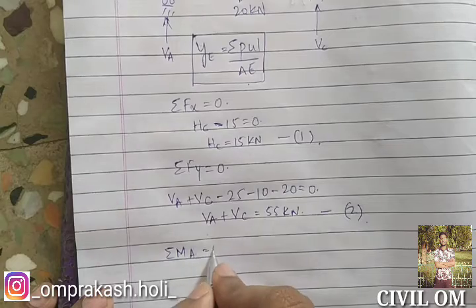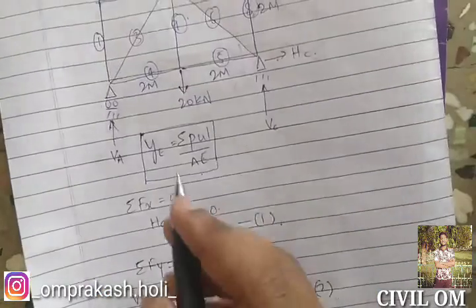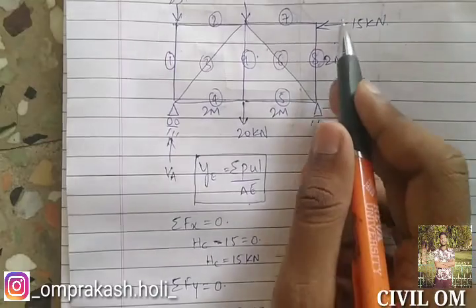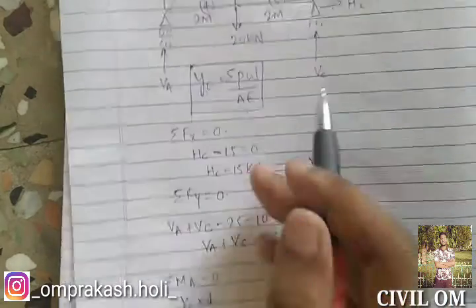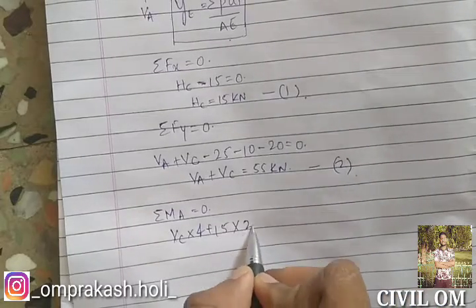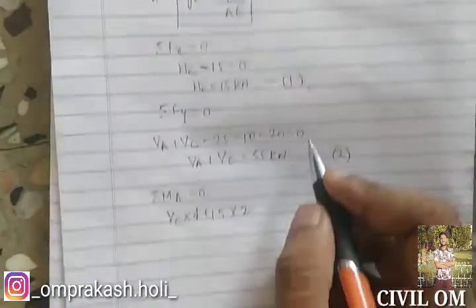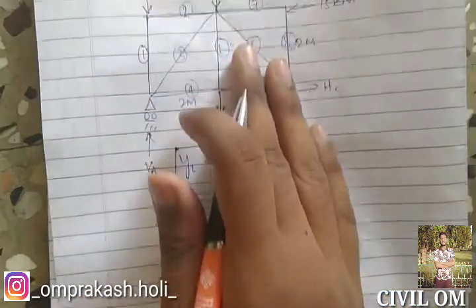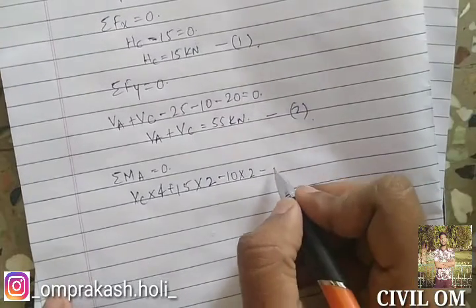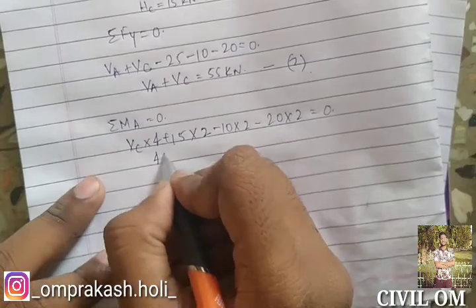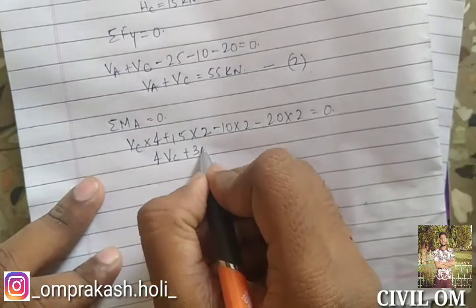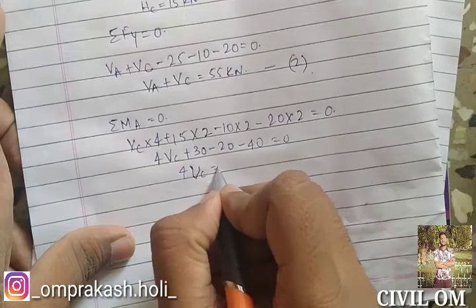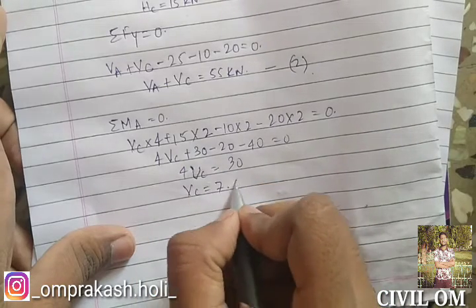Now consider summation of moment at point A equal to 0. We have VC into 4, since the perpendicular distance from VC to point A is 4. Next, 15 into 2, minus 10 into 2, and plus 20 into 2 equal to 0. Solving: 4VC plus 30 minus 20 minus 40 equal to 0, so 4VC equals 30.